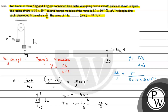Substituting values: ΔL/L = (80/3) / (16π × 10⁻¹⁰ × 2 × 10¹¹). Simplifying: the denominator becomes 3 × 16π × 2 × 10 = 960π. So ΔL/L = 80 / (960π) = 1 / (12π).